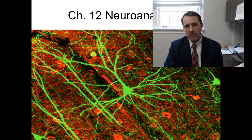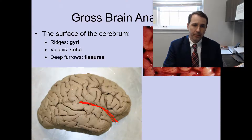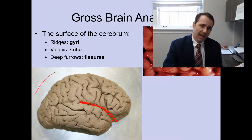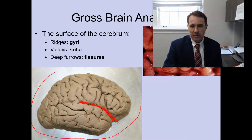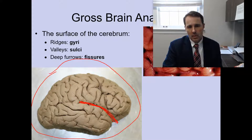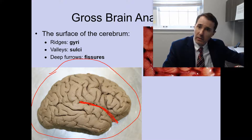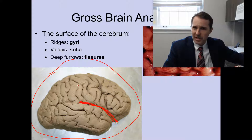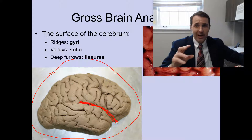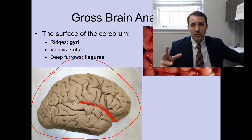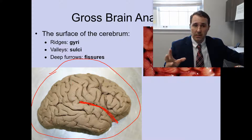Moving into neuroanatomy, let's start with the surface of the brain. If you look at the surface of the brain, what you're going to see is a number of what appears to be little ridges and valleys. These are the gyri and the sulci. The gyri are the bumps — gyri is plural, gyrus means a singular bump.